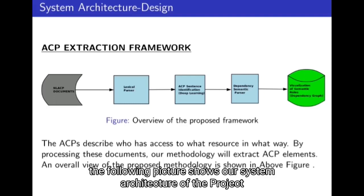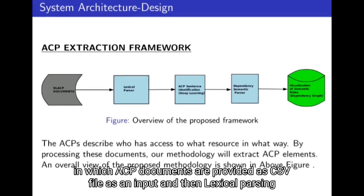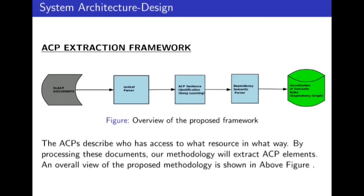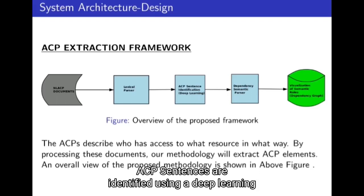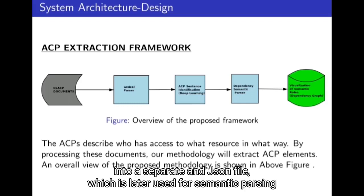The following figure shows our system architecture. ACP documents are provided as a CSV file as input. Then lexical parsing was performed by segmentation and tokenization, and also by TF-IDF vectorization. Next, ACP sentences are identified using a deep learning sequential model, and the ACP sentences were extracted into a separate text and JSON file.